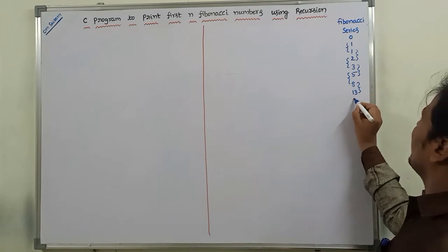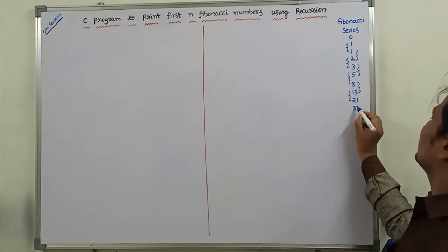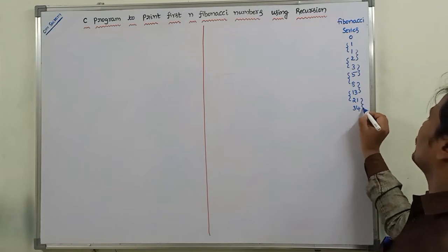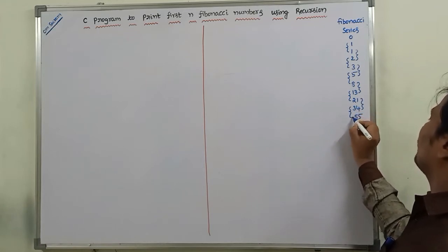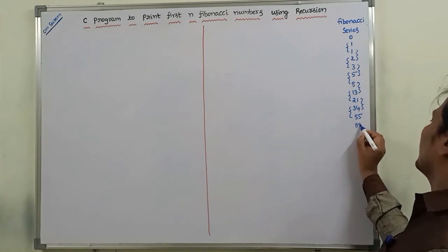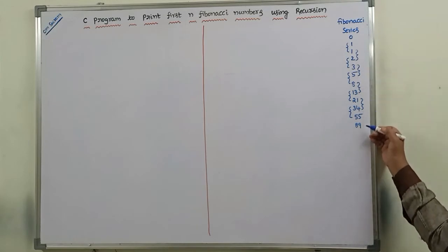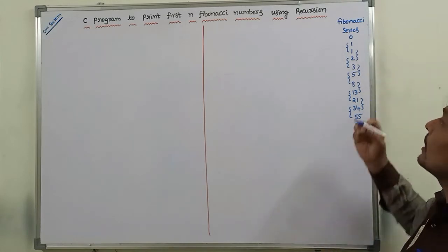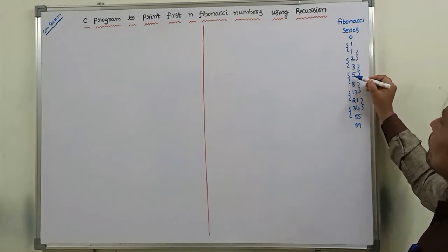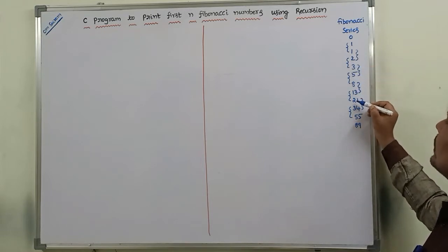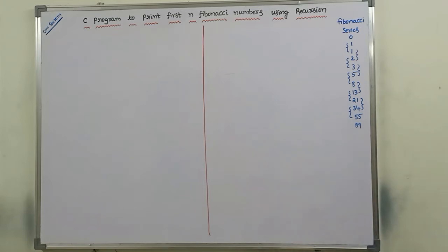Continuing: 8 plus 13 equals 21, then 13 plus 21 equals 34, then 21 plus 34 equals 55, then 34 plus 55 equals 89. In this way we get the Fibonacci series: 0, 1, 1, 2, 3, 5, 8, 13, 21, 34, 55, 89.